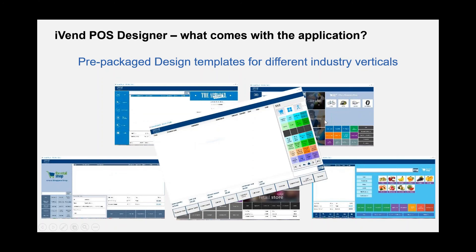The entire point of sale — orientation of buttons, functions each button can perform, labels, images — is fully customizable. The earlier POS buttons such as transaction search, product search, and F1 to F12 are maintained. There are approximately 64 different operations that can be attached to the buttons in the designer.